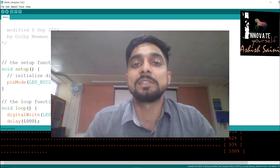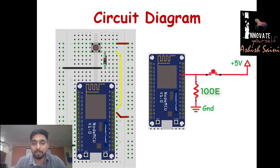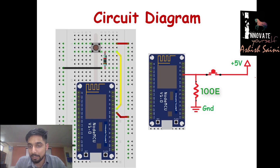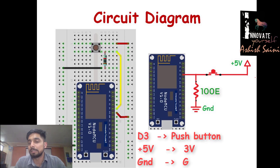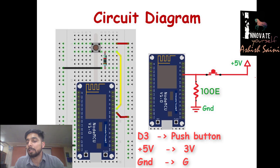Here is the circuit diagram for NodeMCU with push button. We connect pin D4 to one pin of the push button, and connect the other pin to VCC, which can be +5V or +3V. We also use one pull-up resistor so that by default you get a ground signal, and when you press the button you get a high signal of 5V, giving two distinct values to control the LED.